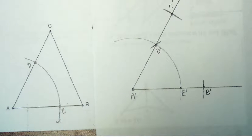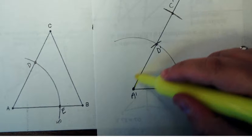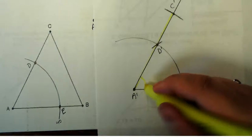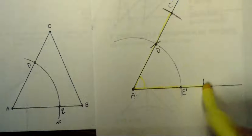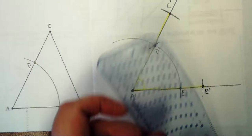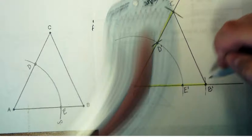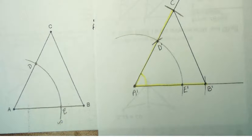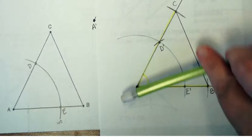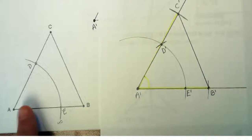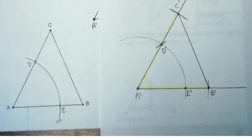So now I have copied the side AC, the angle A, and then the side AB. To complete my triangle, all I have to do is go ahead and connect C prime and B prime, and that will be the third side. So I've used side angle side to ensure that the original triangle and the copied triangle are congruent.